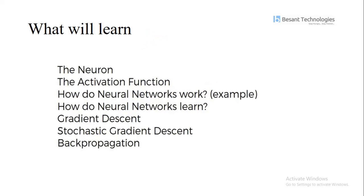So in this session we are just going to discuss about the neuron activation function, how neural networks work, how neural networks learn, gradient descent, stochastic gradient descent, and back propagation. These are all the things we will be going to discuss in this session.